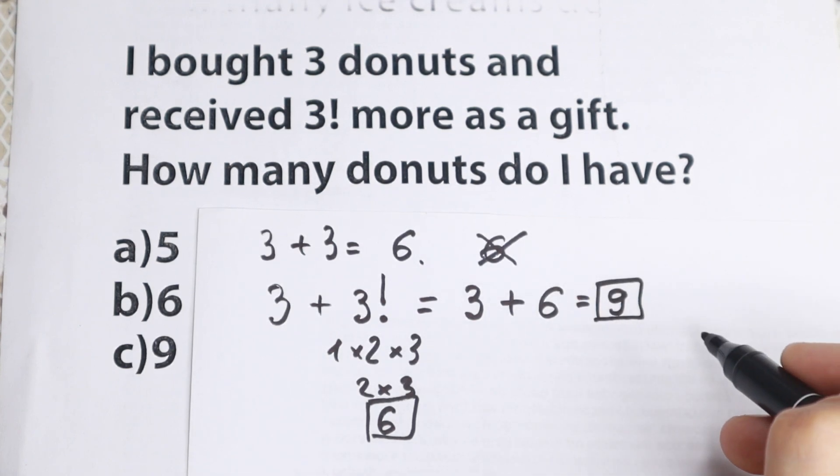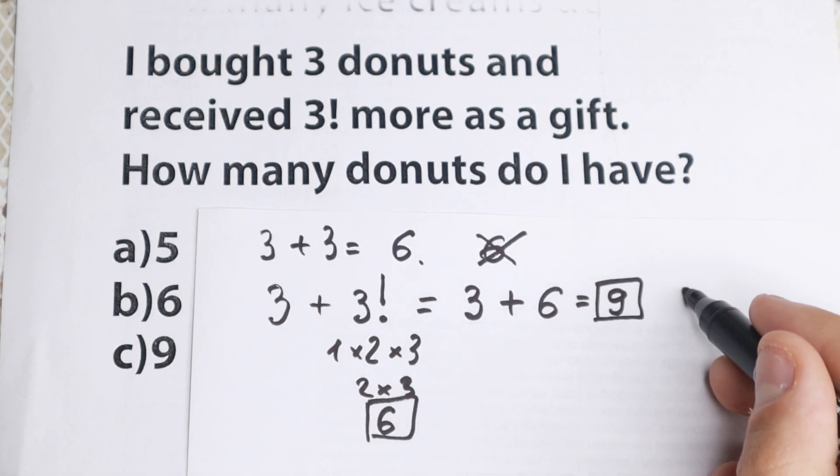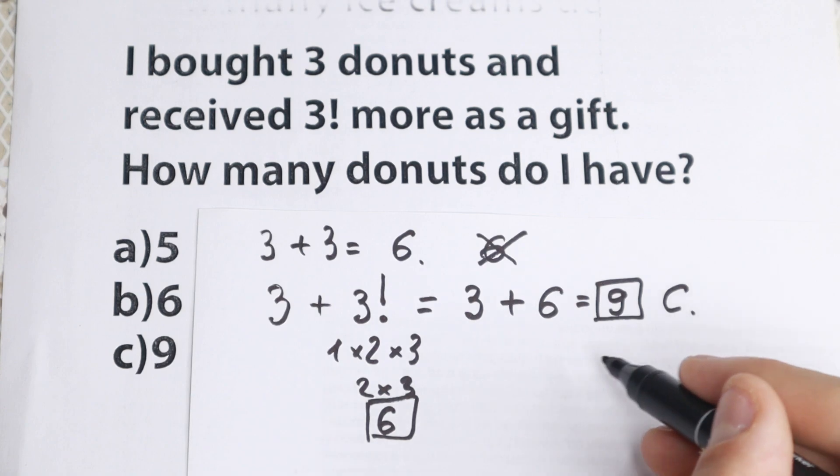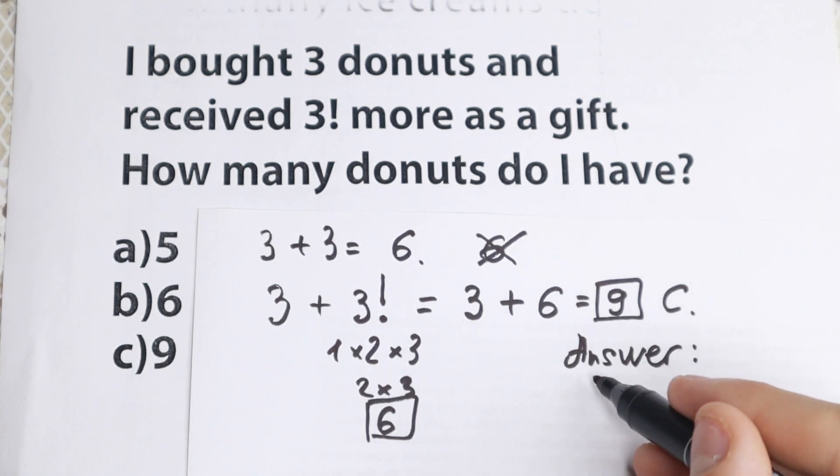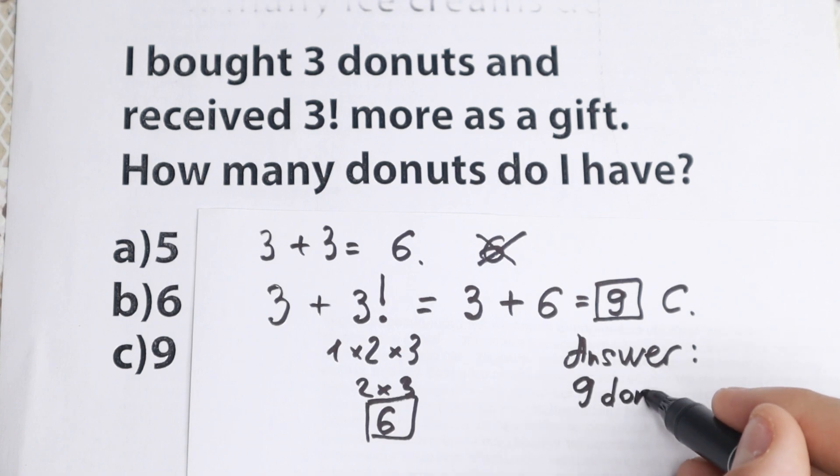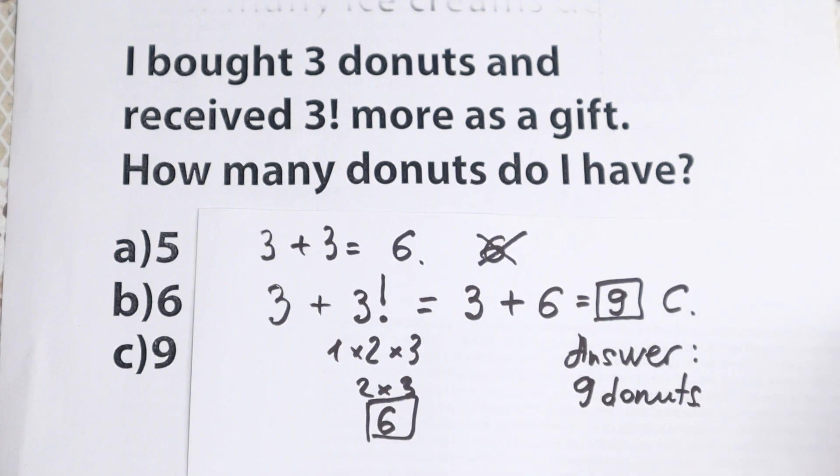And this is our answer. If you're talking about the options, option C, and in this book option C is correct. So our answer, we will have 9, 9 donuts. And this is great.